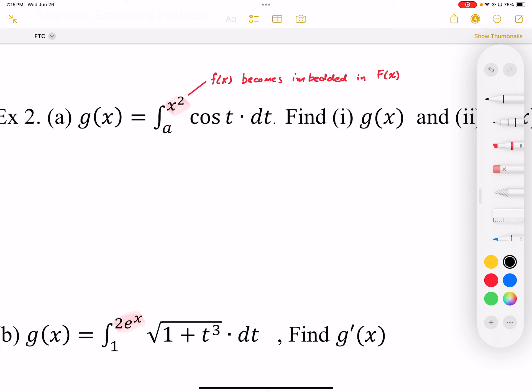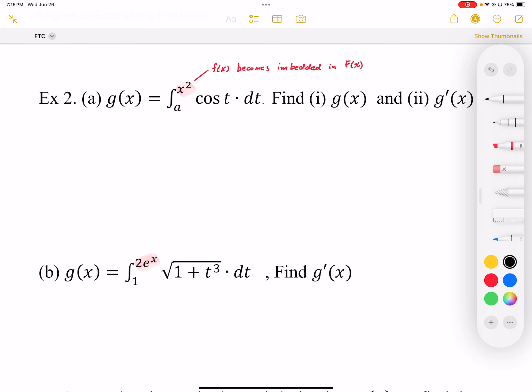Our bound is no longer just x, but the bound is actually a function, or we'll call f of x. And when this happens, this f of x becomes embedded in our antiderivative. So how does that affect our answer when we differentiate this?